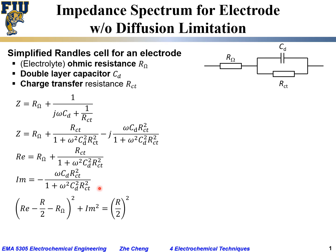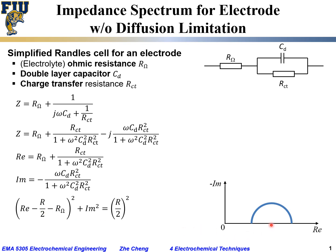Performing the same algebraic manipulation as before, we arrive again at an equation for a circle. The circle's center is at (R_ohm + R_ct/2) on the real axis and its radius is R_ct/2. Plotting the negative imaginary part versus the real part, we again get a semicircle with center along the horizontal axis at R_ohm + R_ct/2 and radius R_ct/2.